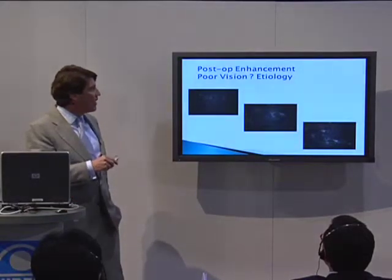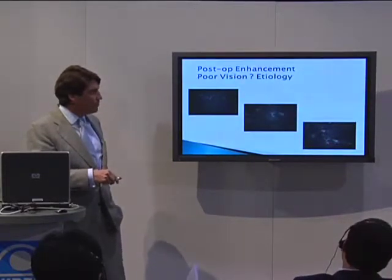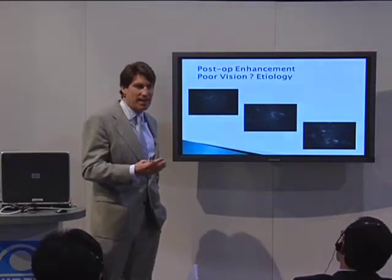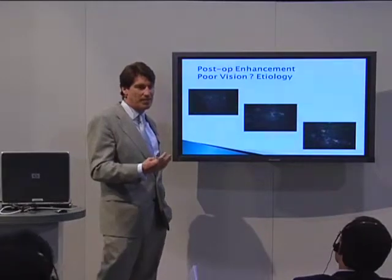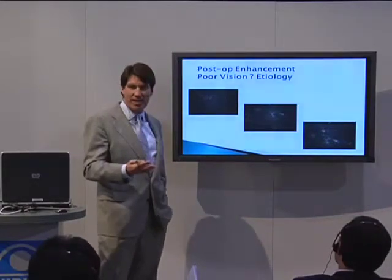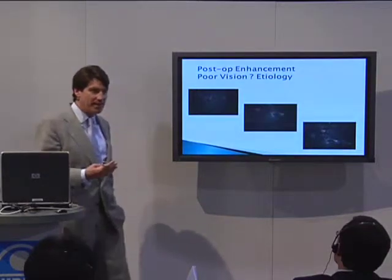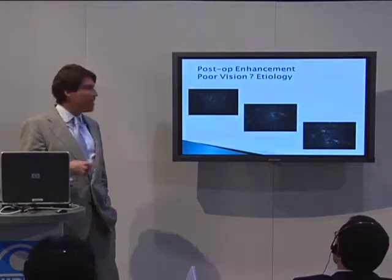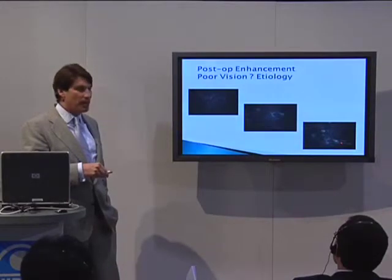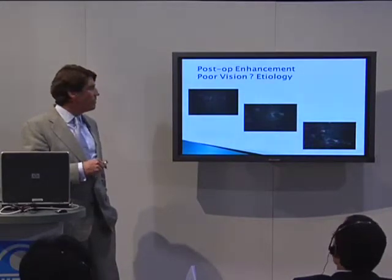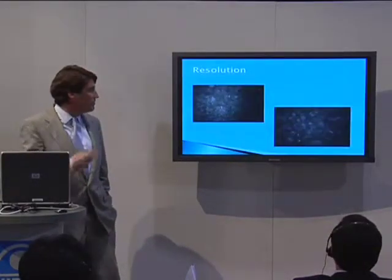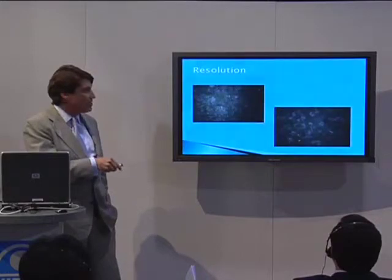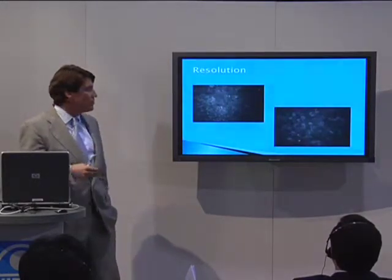There's a post-op enhancement and we're trying to figure out what the poor vision is and what the etiology is. She was getting a keratitis related to an exposure to a drop, and we think she had an allergy to BAK. We kept getting poor vision every time she'd go on these over-the-counter drops, but we could pick up that it was causing a keratitis subclinically. This is what she looks like after we stopped everything, waited a month or two, and she healed.